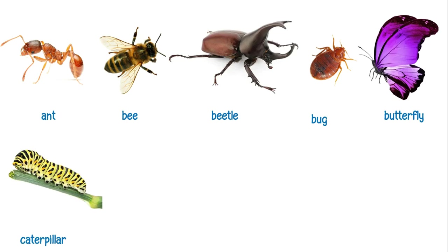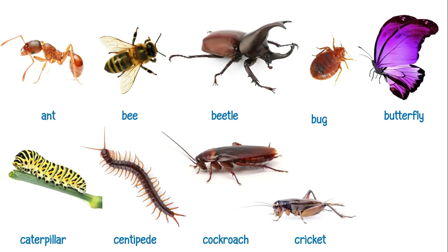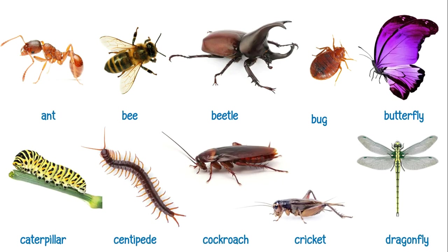This is a caterpillar. This is a centipede. This is a cockroach. This is a cricket. This is a dragonfly.